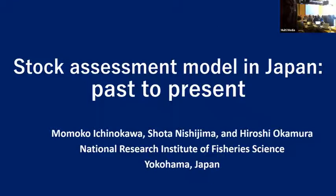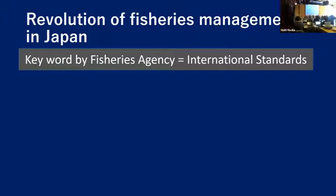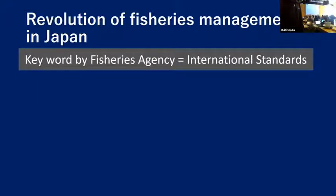My talk is about stock assessment model in Japan, in particular focus on past and present. Japanese fisheries management is now changing rapidly, especially since 2017. Also, Japanese management system and the harvest control rule have been very unique, but the fisheries agency raised the key word of international standard to catch up with global standards since 2017.